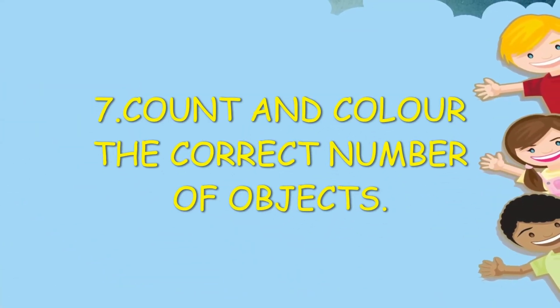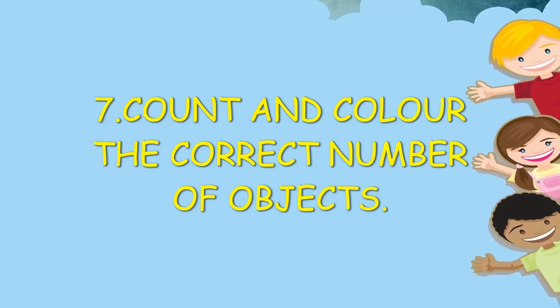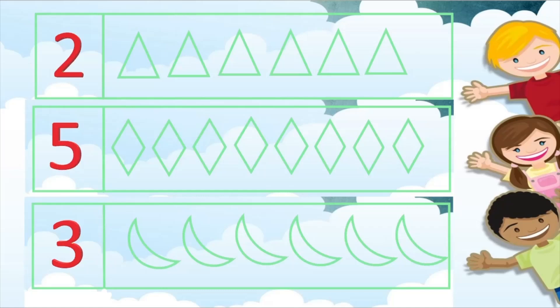Seventh activity, count and color the correct number of objects. Number 2, then we color two objects. Five, then color five objects.